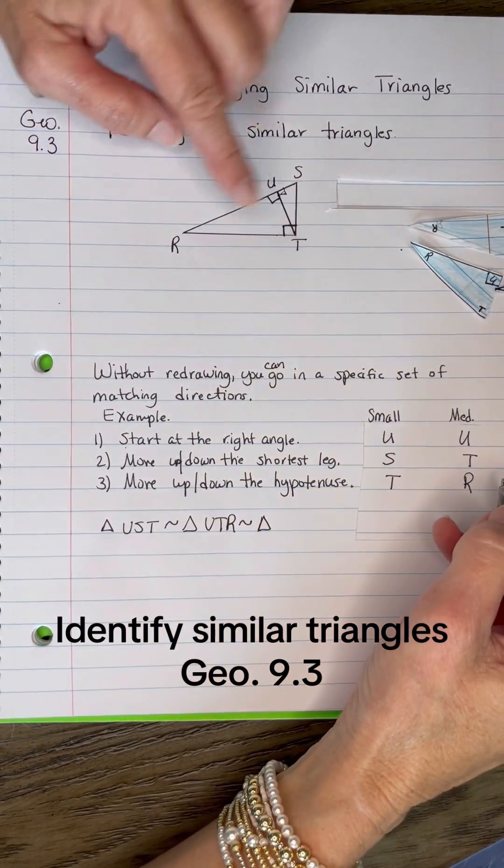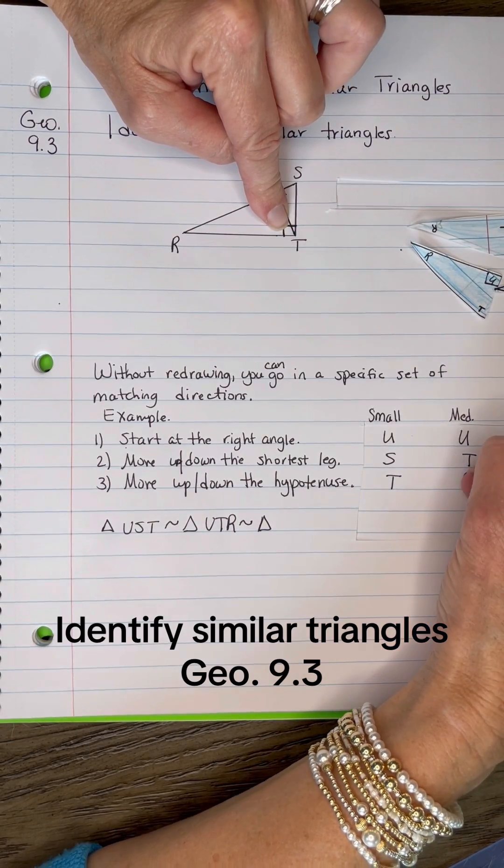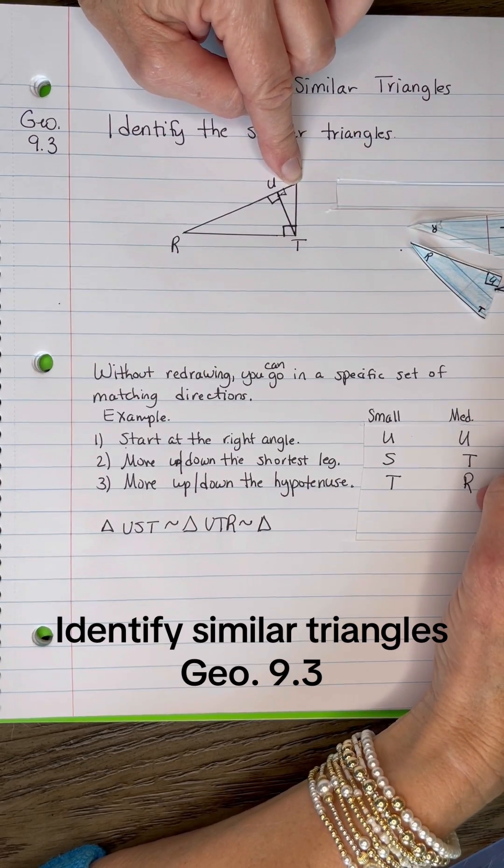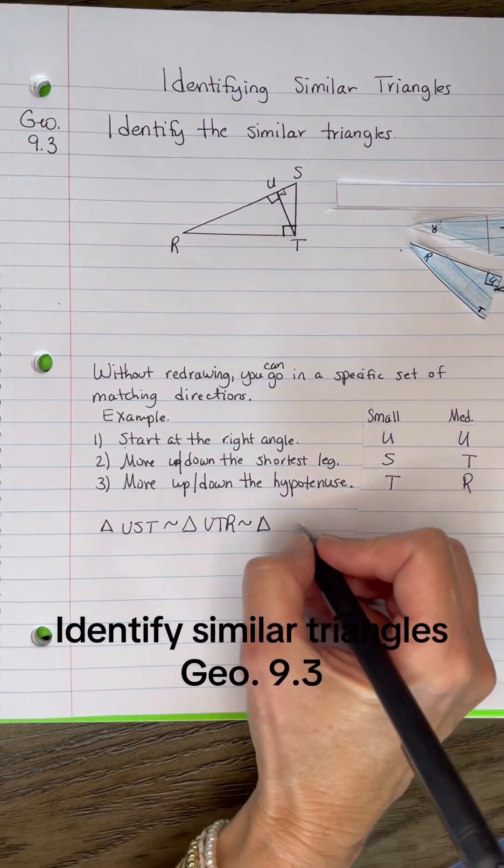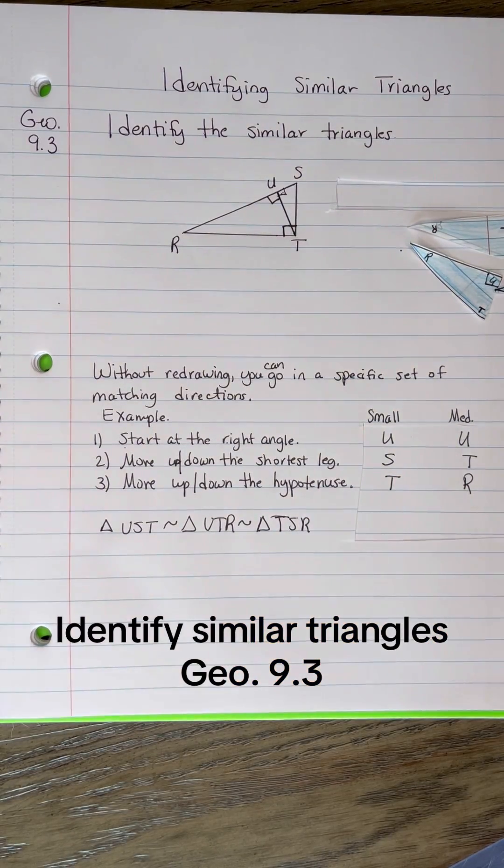And then for the last one, the large one, starting at the right angle, that would be T. And then going up the short leg to S, and then down the hypotenuse to R. So that one would be TSR. So that is one way that you can do it.